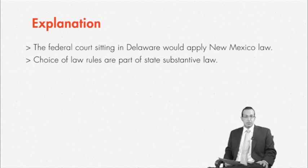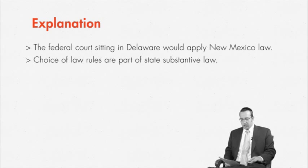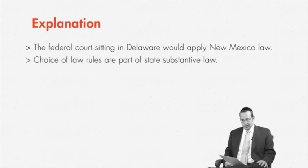Now let's make things a bit more complicated. When a case is transferred from one federal court to another for the purposes of convenience under 28 U.S.C. 1404, the transferee court — that is, the receiving court — deals with the choice of law questions as though it were the transferor court. When a case is transferred for convenience under 1404, we look at it as though we were still sitting in the transferor district.